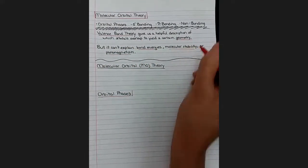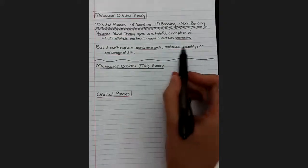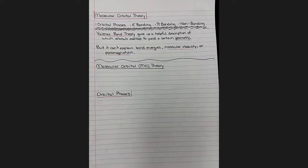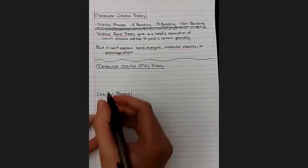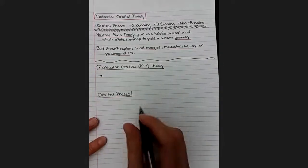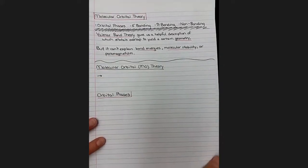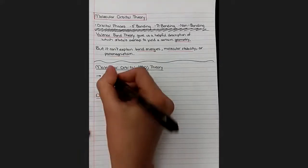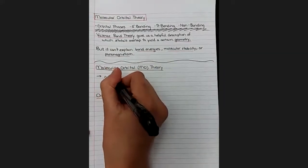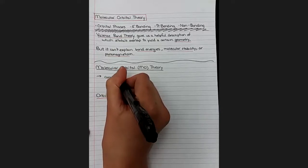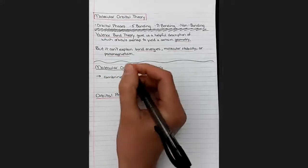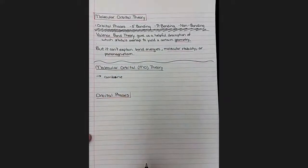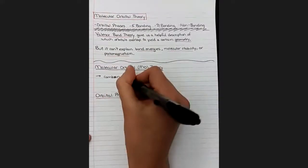This is sort of like the gaps left by valence bond theory, and we're going to fill them with our new theory, molecular orbital theory. So a molecular orbital is just what it sounds like. It's an orbital for a molecule that covers more than one atom. If you remember when we did orbital mixing to form hybrid orbitals, we're going to be combining orbitals in a similar way to form molecular orbitals.